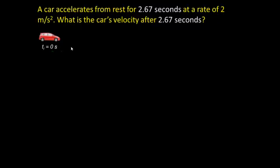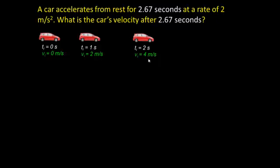From the previous slide, the car starts at rest, hits 2 meters per second after 1 second, 4 meters per second after 2 seconds, and 6 meters per second after 3 seconds. Our intuitive method doesn't allow us to calculate velocity for fractions of a second — and that's where the first kinematic equation comes in handy.